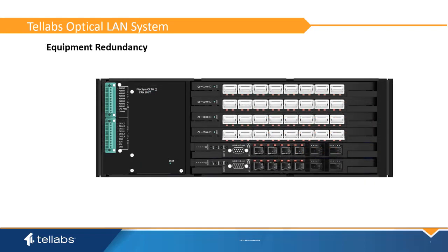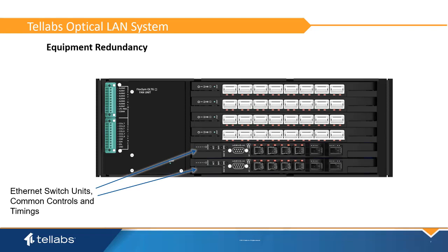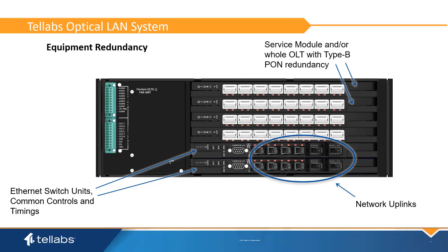In order to achieve five nines reliability, enterprises take advantage of the equipment redundancy options of the OLT. The OLT can be equipped with the following duplex components: Ethernet switch units, common controls and timing source, network uplinks, service module and/or whole OLT with Type B PON redundancy, power plant, and fans. With the fully equipped OLT, enterprises can benefit from non-service affecting side switching, failover, and card swapping measures at less than 50 milliseconds. Any failover of redundantly deployed cards generates an alarm to the TELLAB's PON manager while service remains intact.